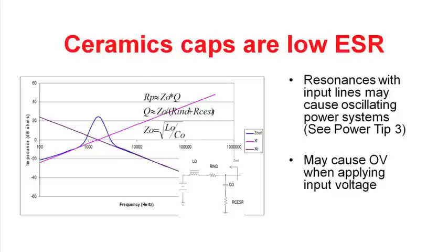Another thing to watch out for in these ceramic capacitors is their very low ESR. While that's very good for filter applications and high ripple currents, it also can create some problems in your power supply design. One of the problems it may create is your capacitance may oscillate with the input lines, and that can cause a high source impedance on the power supply and can lead to oscillating power systems. For more information on this particular problem, take a look at Power Tip 3.